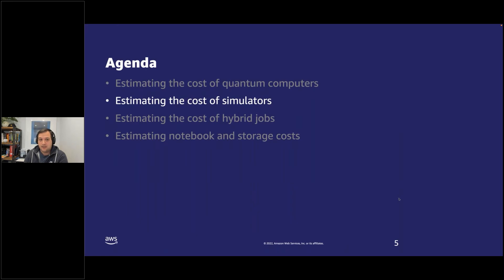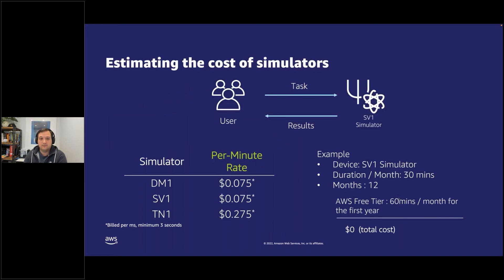The next topic is the cost of simulators. Note that this is a very different cost model to the quantum computer cost model that we just covered. In this case, we're charged a per-minute rate depending on which simulator we want to use. Users submit tasks to the simulators, and how long those tasks take to run determines the total cost.